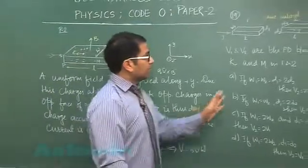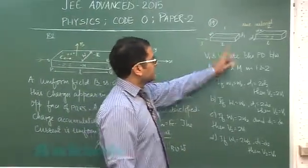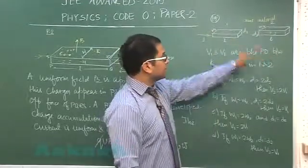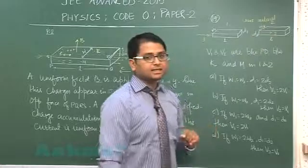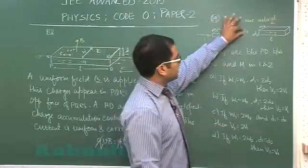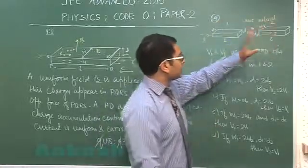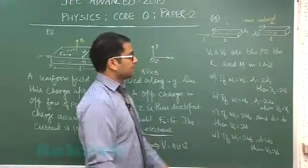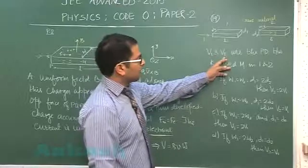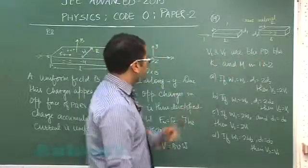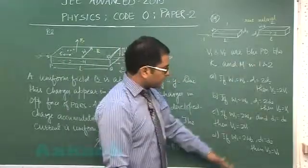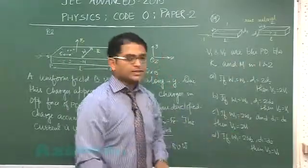Now based on that, question number 19 says these two strips are of same material, length is same and same current is passed, but the thickness D1 and D2 are different, width are different. Now the question says V1 and V2 are the PD between K and M, the front face and the back face in 1 and 2. And based on that we got to relate these expressions.